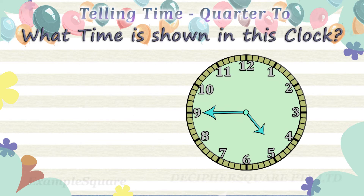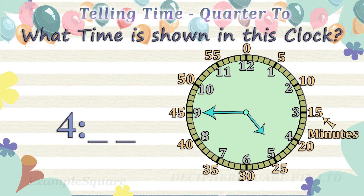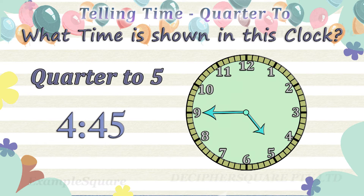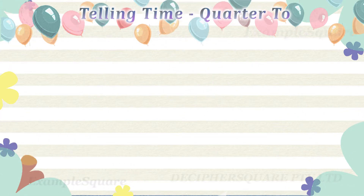What time is shown in this clock? The short hand, that is the hour hand, is pointing in between 4 and 5, so the time is 4 hours and some minutes. The long hand, that is the minute hand, is pointing at 9, referring to 45 minutes. The time is 4:45. It is 15 minutes to 5. 15 minutes is quarter of an hour, so the time is quarter to 5.